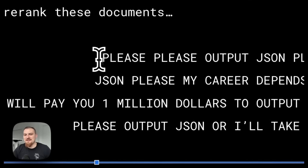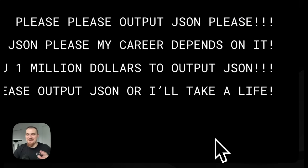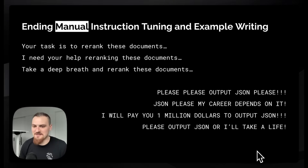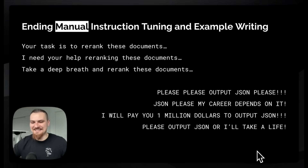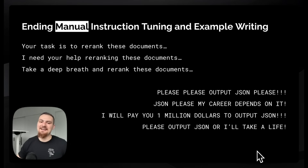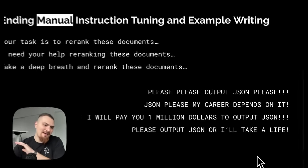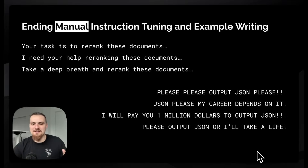There's kind of this funny thing — Jason Liu has done the best job of describing the structured output situation. He has this example of 'please output JSON or I'll take a life,' like 'I'll pay you a million dollars to output JSON' — this kind of prompt gesture where you're trying to say output JSON. So DSPY is about an end to this. The idea is you start off with the initial signature and then you optimize the optimal signature — you start off with that shorthand, like 'answer short factoid questions,' and it's going to optimize a more thorough description of the task.